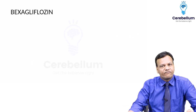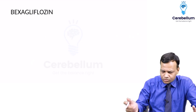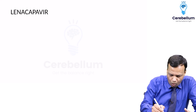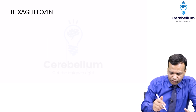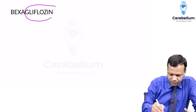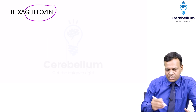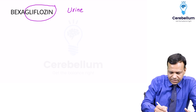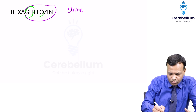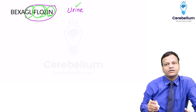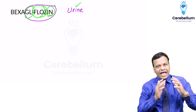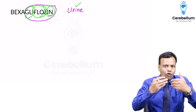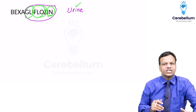Next is Baxagliflozin. This is a drug similar to all other gliflozins. To remember gliflozins, just write 'urine' at the end. So what are they doing? They are causing the flow of glucose in the urine.